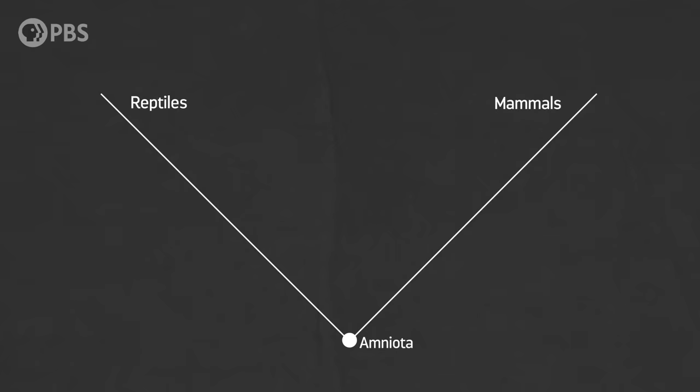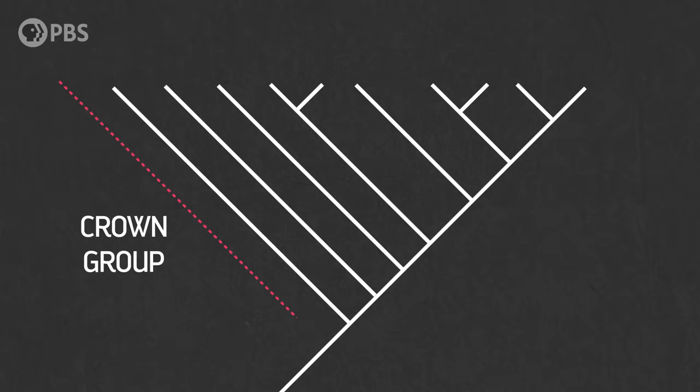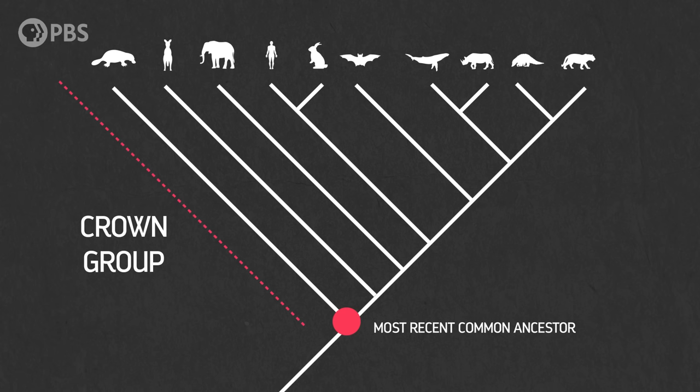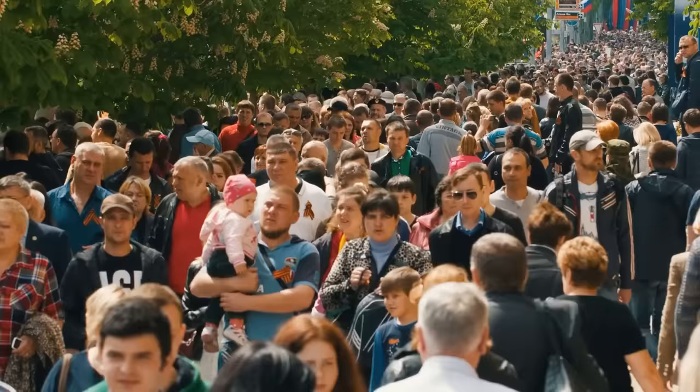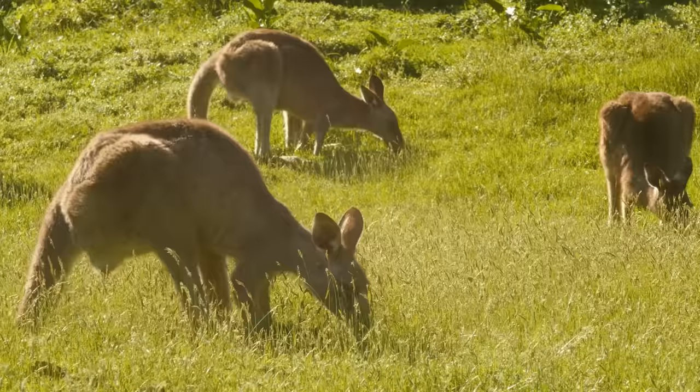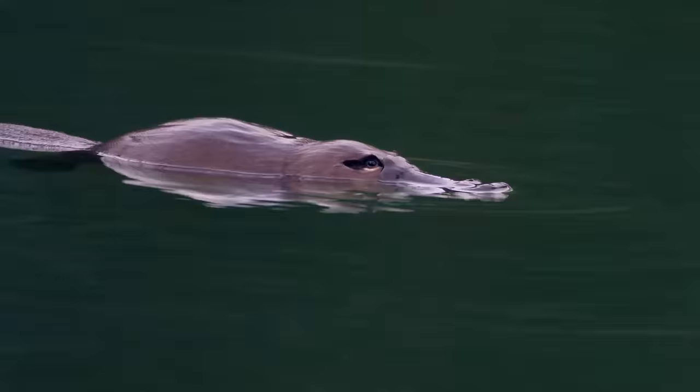So what even is a mammal, and how do we figure out what counts as one in the fossil record? Mammals today are all part of what's called crown group Mammalia. A crown group includes all of the living members of a group back to its most recent common ancestor. It also includes all the extinct descendants of that common ancestor. For crown group mammals, our most recent common ancestor is the one shared by placentals like us, marsupials like the kangaroo, and the monotremes like the platypus.